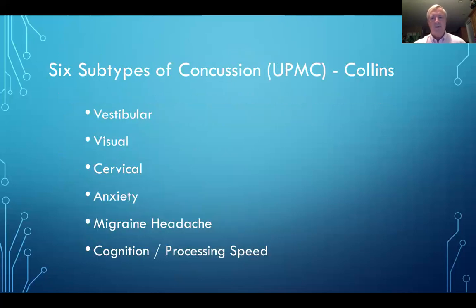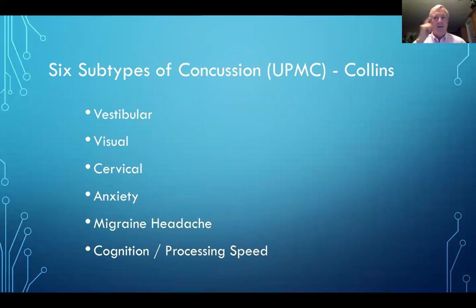There are six subtypes of concussion from the University of Pittsburgh Medical Center. Note that the first three are vestibular, visual, and cervical — those make up the VVC triad. Anytime we're talking about visual processing, vestibular inner ear, and cervical, those three are all very linked.